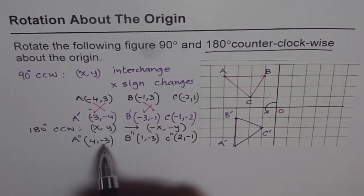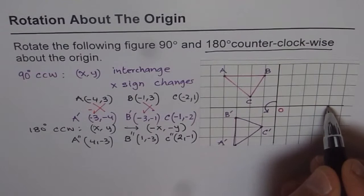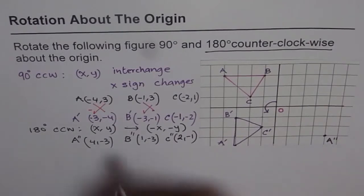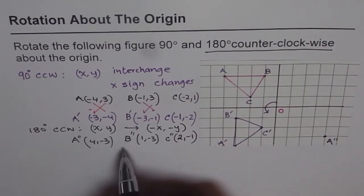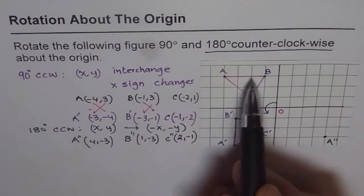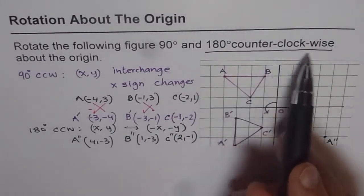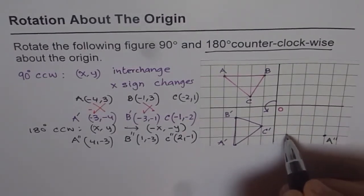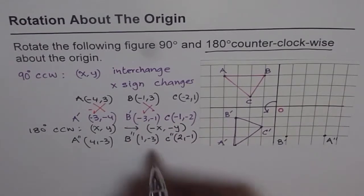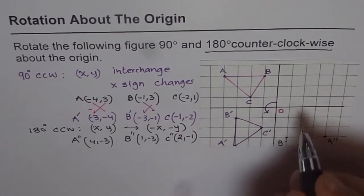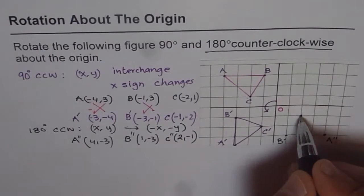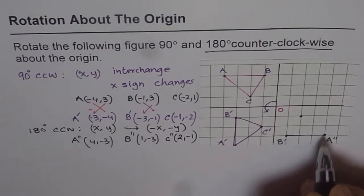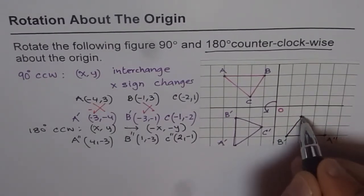A double dash is at (4, −3). B double dash, the image of our triangle after 180 degrees counterclockwise, is at (1, −3). And C double dash is at (2, −1). These are the new points for our triangle after 180 degrees rotation. Let's join them — so we get this triangle.